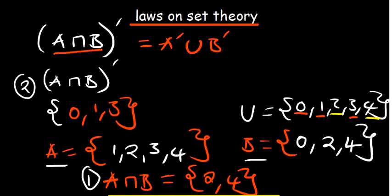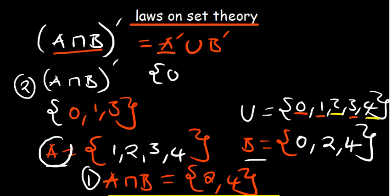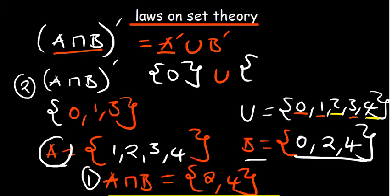Moving to the right-hand side: A complement means members not in A but within the universal set. Comparing with the universal set {0,1,2,3,4}, only 0 is not part of A, so A complement = {0}. For B complement, we exclude 0, 2, and 4 from the universal set, leaving 1 and 3. So B complement = {1, 3}.